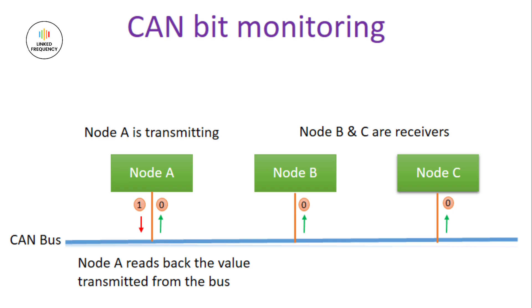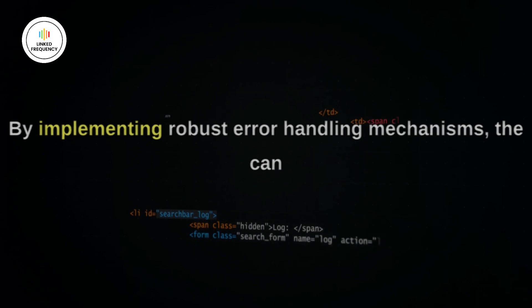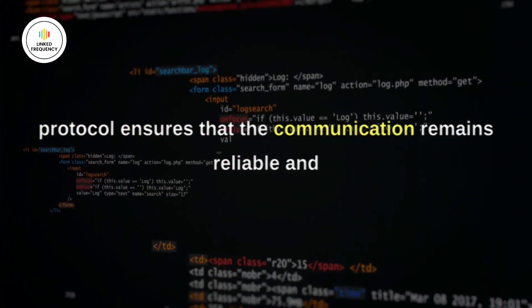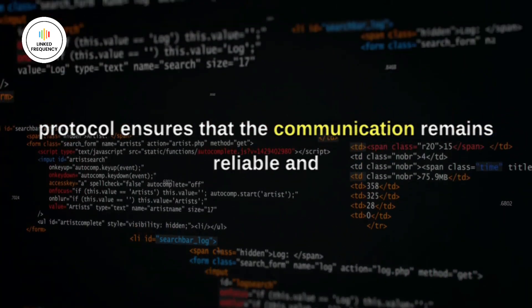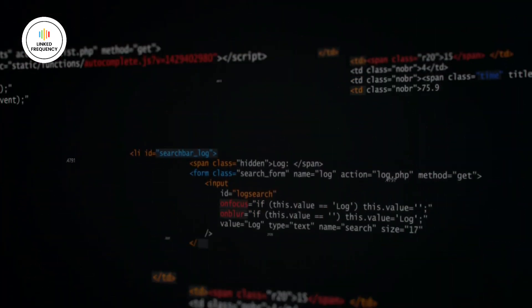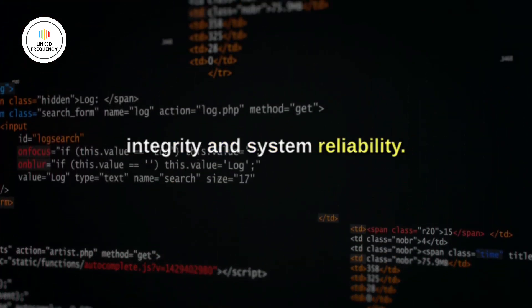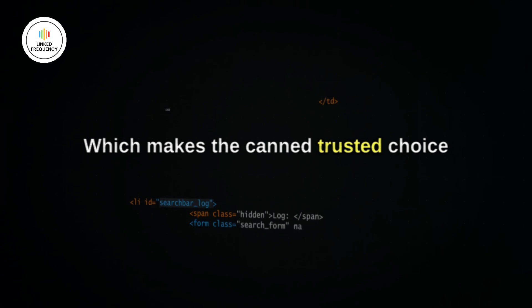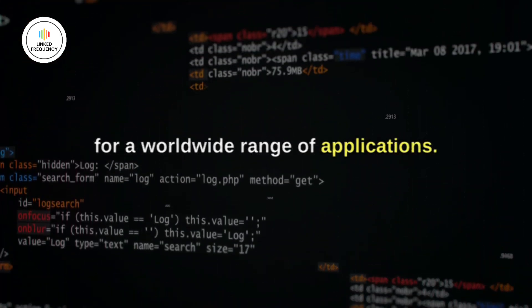The arrows on screen represent the mechanism for better understanding. By implementing robust error handling mechanisms, the CAN protocol ensures communication remains reliable and consistent even in challenging environments. These mechanisms enable data integrity and system reliability, making CAN a trusted choice for a wide range of applications.